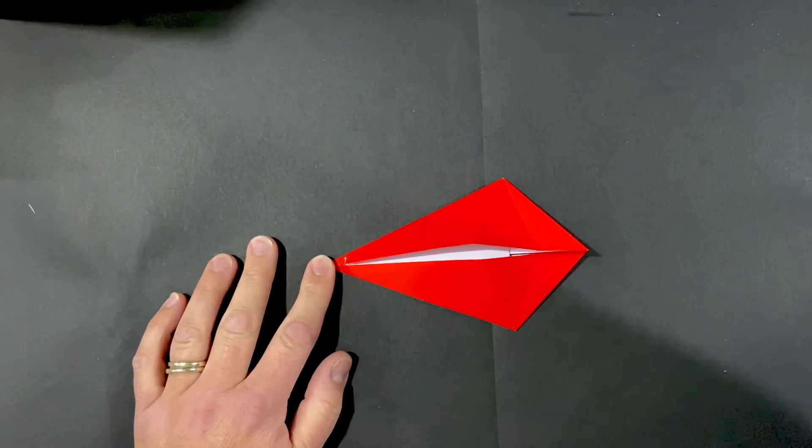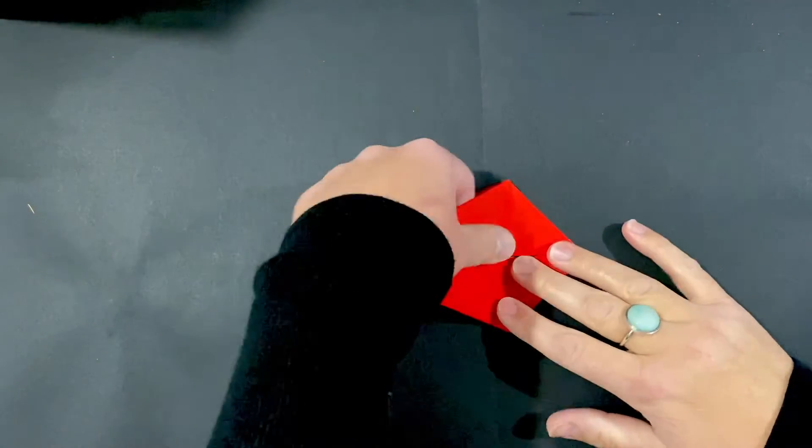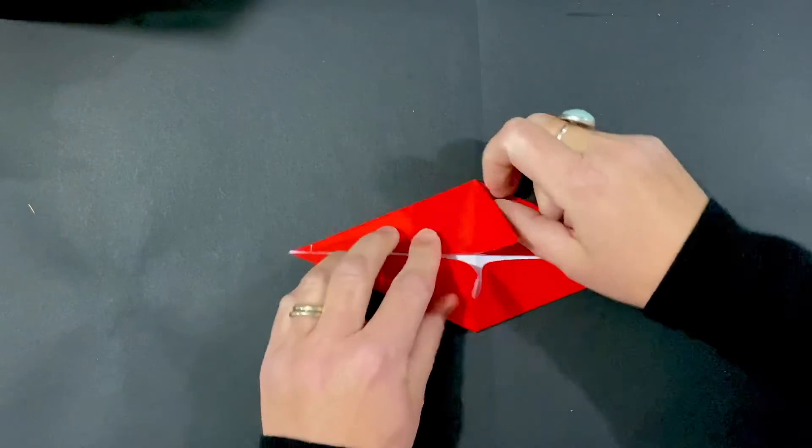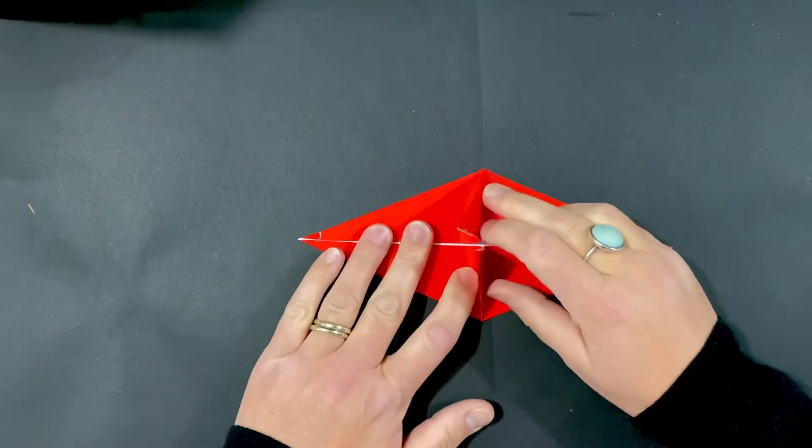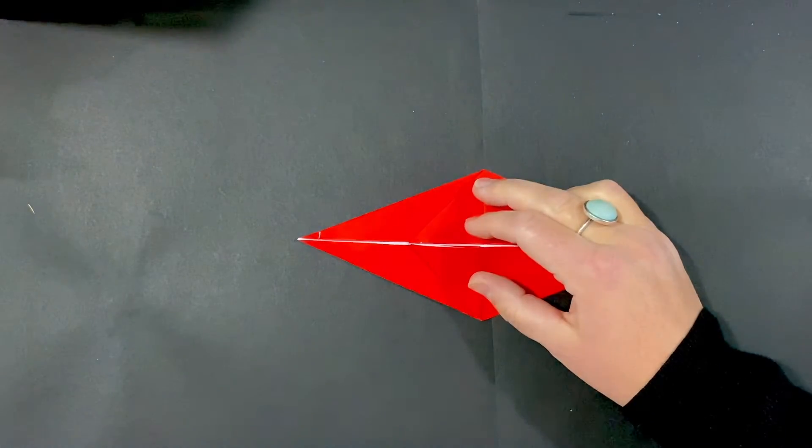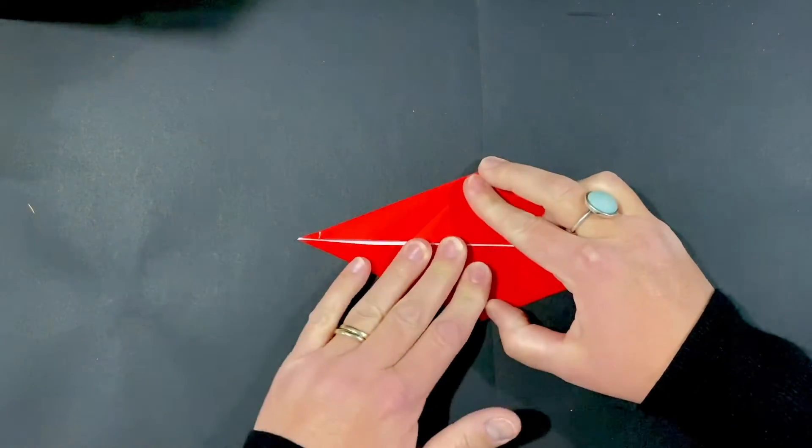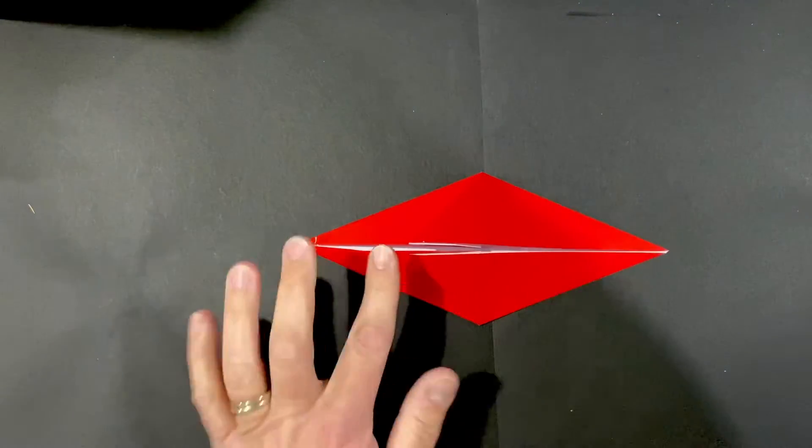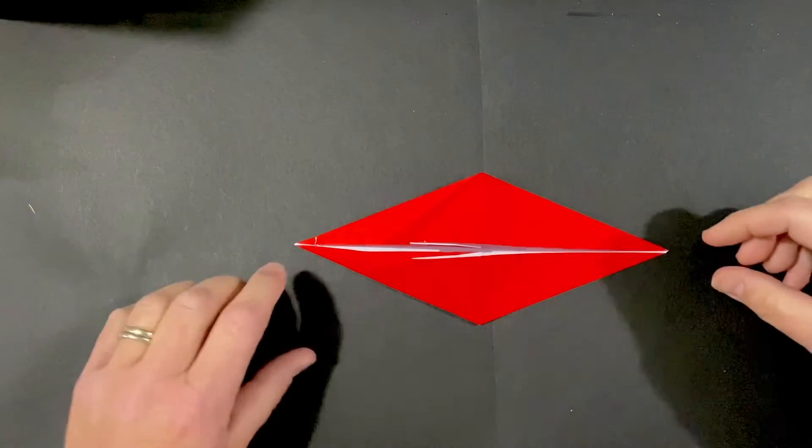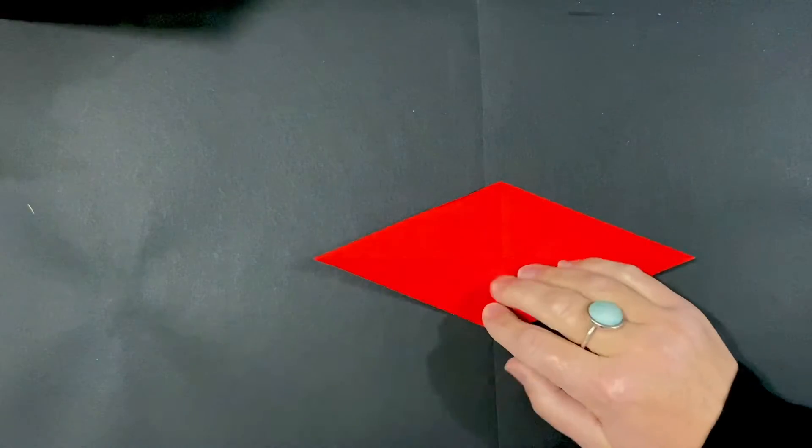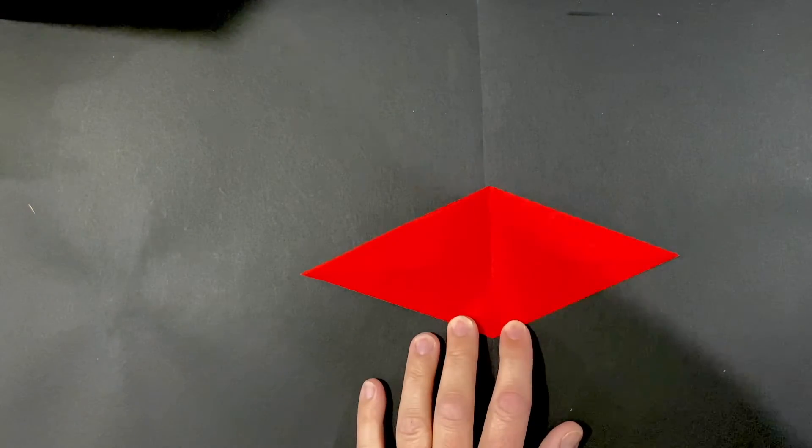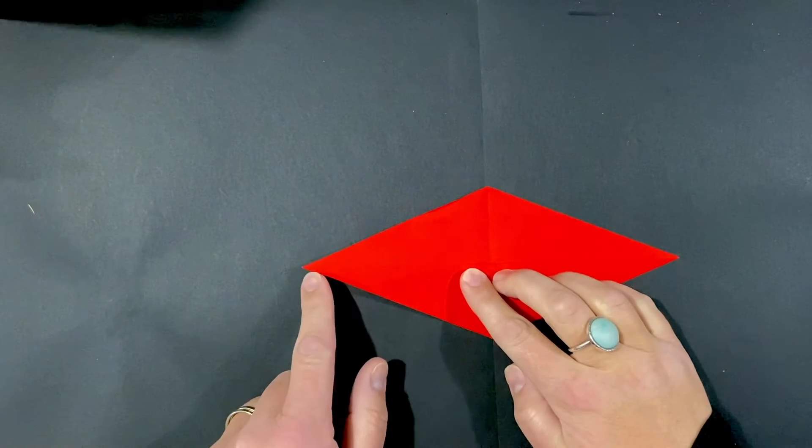All right, so now we're going to unfold it and you will see that right here you've got two little flaps. We're going to fold those flaps to the left. And then you've got the moving flaps to the left side, and we're going to flip the paper over from top to bottom so the flaps are now on the bottom side.